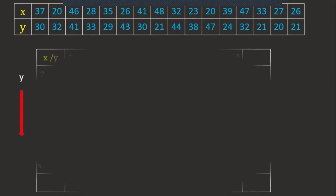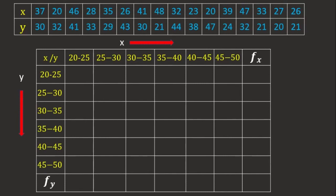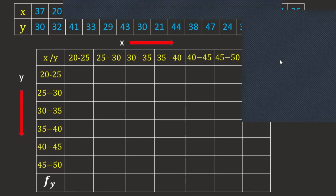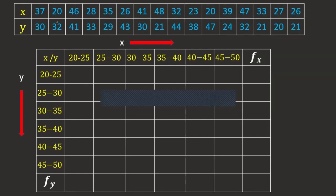One variable should be placed horizontally and the other vertically. The class intervals run up to 45 to 50 in both directions. Always check the intersection cell for each data pair. For example, 37 in the horizontal axis falls in a particular column, and the corresponding value 30 on the vertical axis falls in its row — 30 should lie in that specific row.